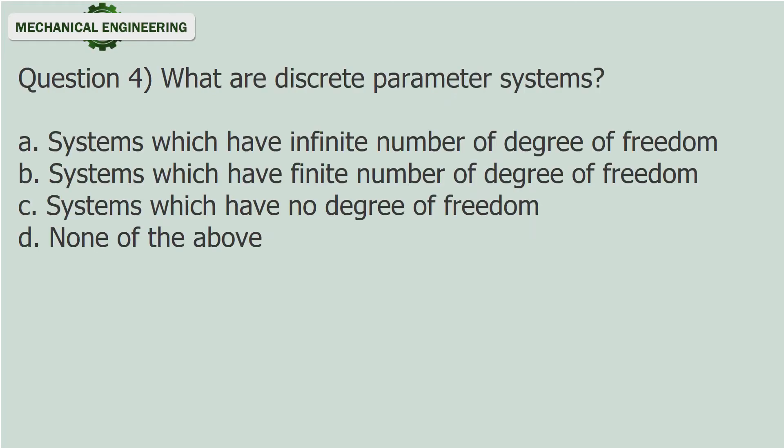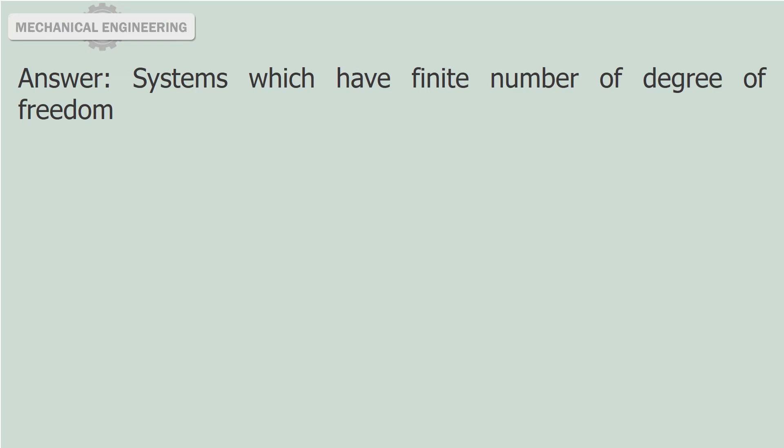Question 4: What are discrete parameter systems? a. Systems which have infinite number of degree of freedom. b. Systems which have finite number of degree of freedom. c. Systems which have no degree of freedom. d. None of the above. Answer: Systems which have finite number of degree of freedom.